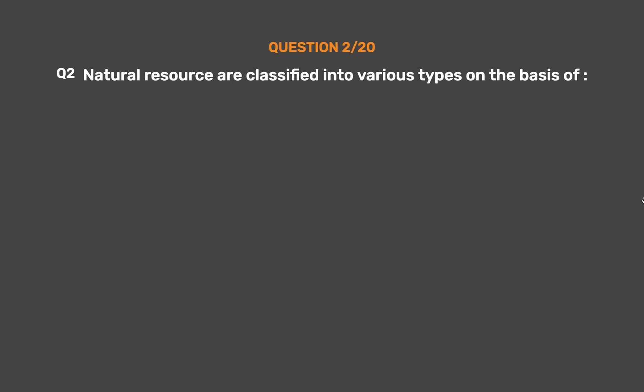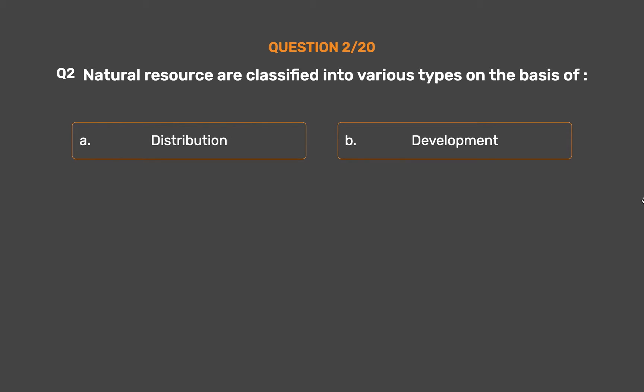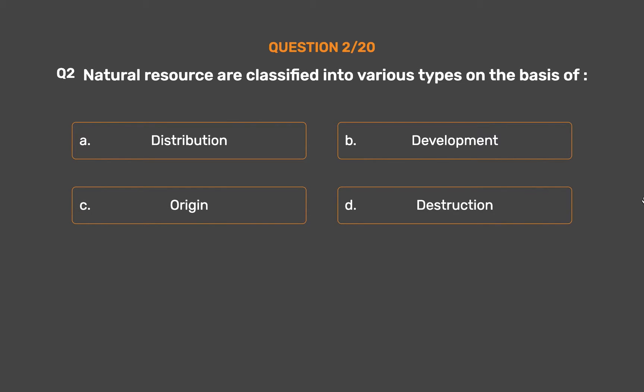Question number 2. Natural resources are classified into various types on the basis of: Option A: Distribution. Option B: Development. Option C: Origin. Option D: Destruction.